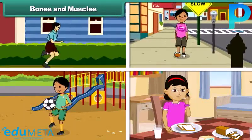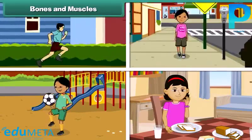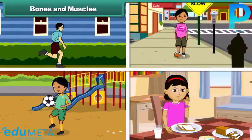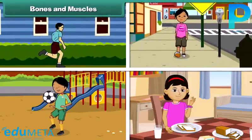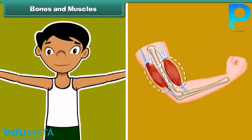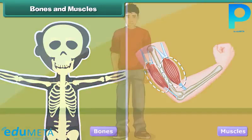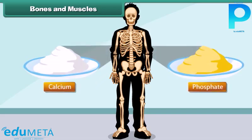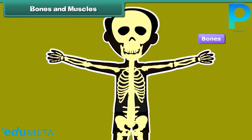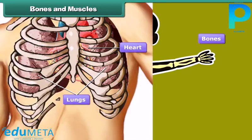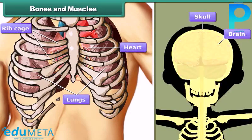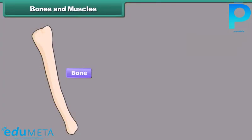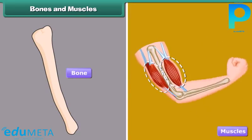Running, jumping, walking, moving, folding hands, and swinging legs are activities that involve movement and are made possible by bones and muscles. Bones are hard organs made up of minerals like calcium and phosphate. They provide a framework, support, and protection to internal organs — for example, the ribcage protects the heart and lungs, and the skull shields the brain. Muscles attach bones to one another and facilitate movement.